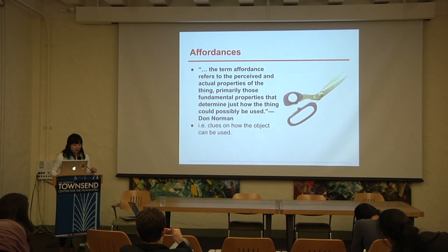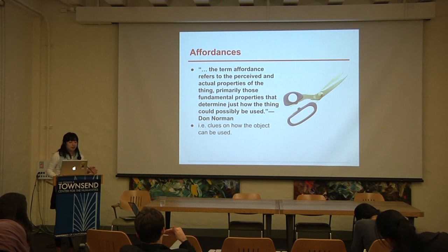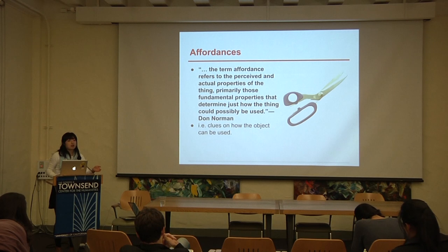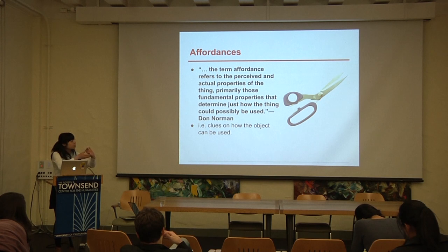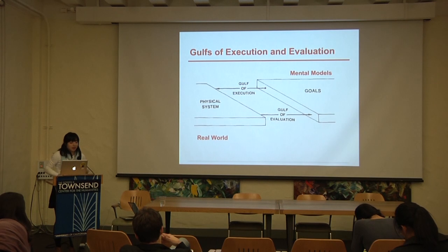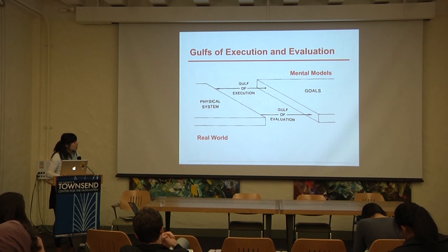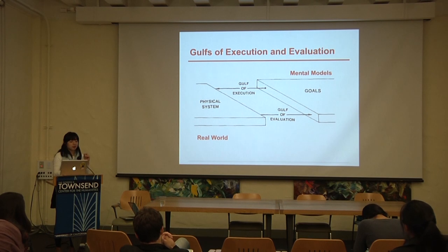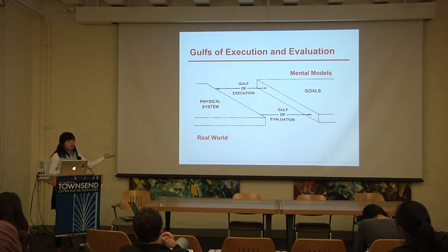Another concept is affordances and mental representations. Affordances are the perceived and actual properties of a thing that give hints about how it could be used — like how the holes in scissors are affordances that suggest you put your hand in. Something repeated over and over was the gulfs of execution and evaluation: your mental model should be reflected in what's in the real world. People have goals and the physical system should reflect that.